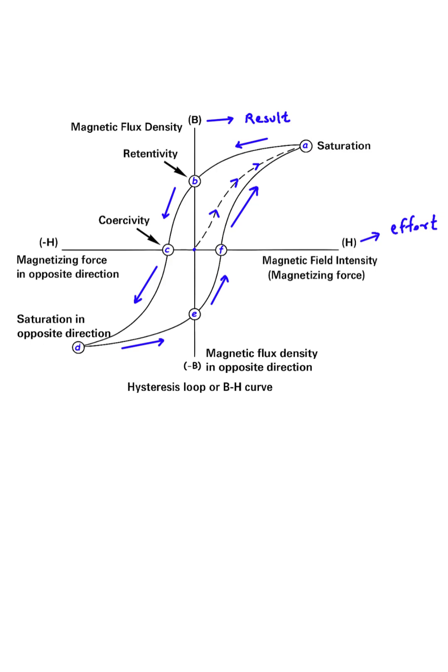Hello and welcome. In this video, we're going to explore this fascinating graph known as a hysteresis loop, or a BH curve. It shows us how magnetic materials behave when they are magnetized.